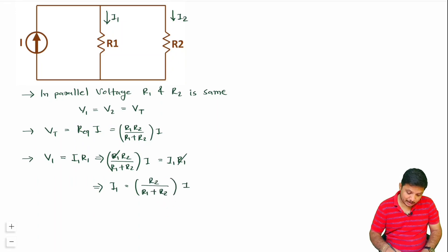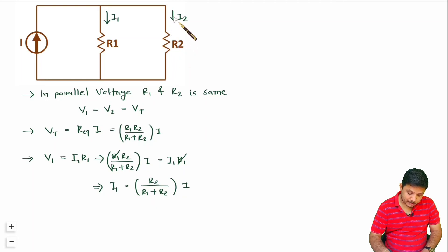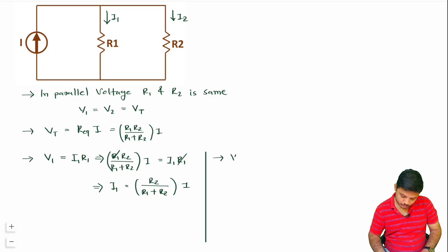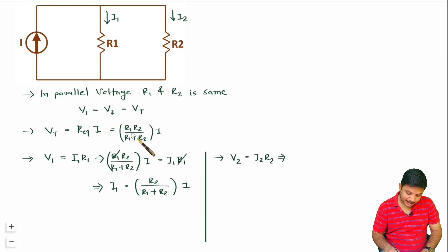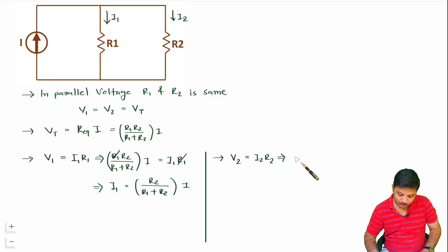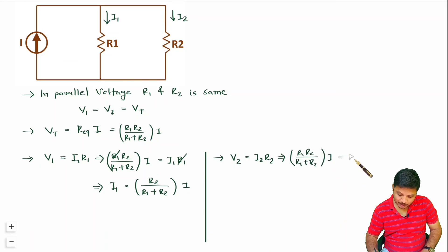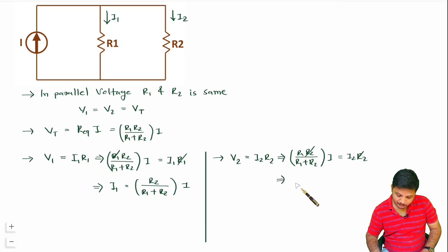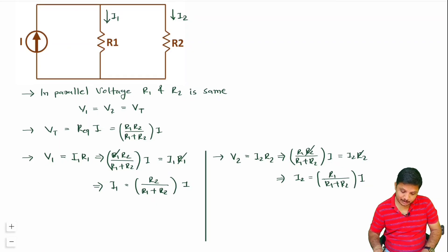Similarly, if we want to calculate the voltage across R2, that is V2 equals I2·R2. Since V2 equals Vt, we substitute: (R1·R2)/(R1+R2) times I equals I2·R2. The R2 terms cancel, giving us I2 equals R1 divided by (R1+R2) times I.